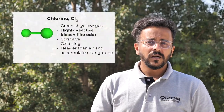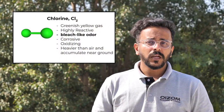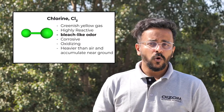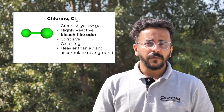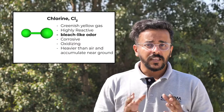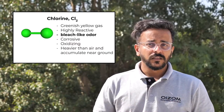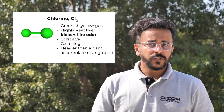Chlorine is a highly reactive, greenish yellow gas with a suffocating, pungent bleach-like odor that is detectable at low concentrations, which is above 0.3 to 0.5 ppm. It is highly oxidizing in nature and has bleaching properties. Chlorine is heavier than air, which causes it to remain in low-lying areas or areas near the ground with little air movement.